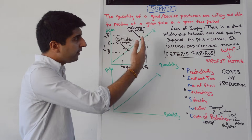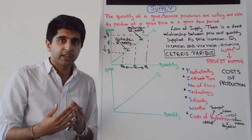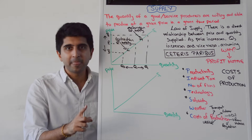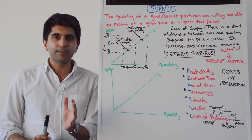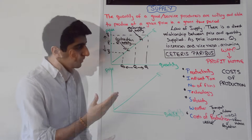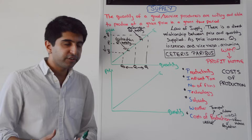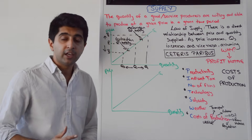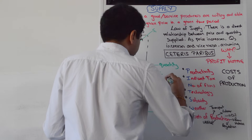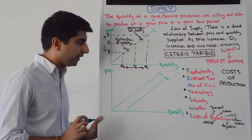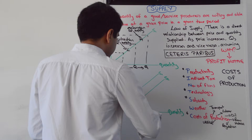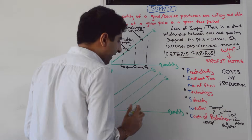When prices change, we move along the supply curve. However, it's not just price that can affect supply — there are various non-price factors that can affect supply as well. Just like with demand, non-price factors will shift the supply curve. If non-price factors increase supply, the supply curve shifts to the right from S1 to S2. Whereas if non-price factors reduce supply, the supply curve shifts to the left from S1 to S3.